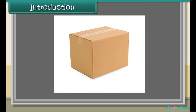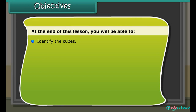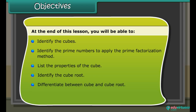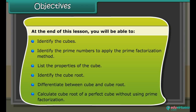You can find the amount of oil using the volume of the cube. Objectives: at the end of this lesson you'll be able to identify cubes, identify prime numbers, apply the prime factorization method, list the properties of the cube, identify the cube root, differentiate between cube and cube root, and calculate the cube root of a perfect cube without using prime factorization.